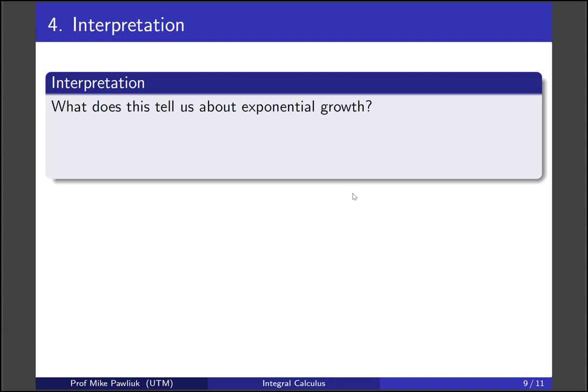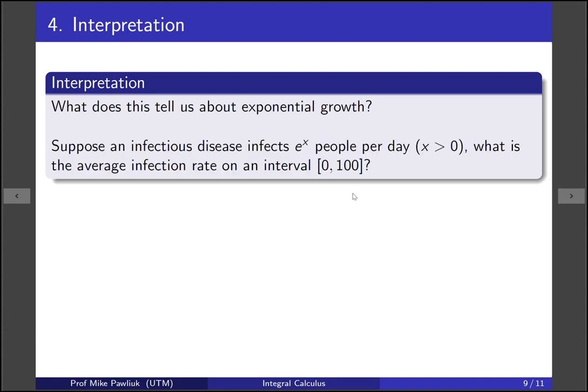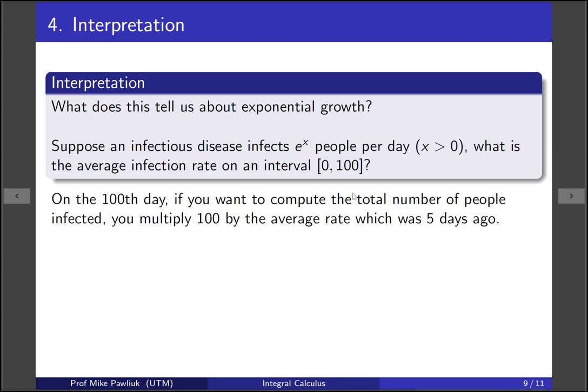Okay so now what does this tell us about exponential growth? So suppose an infectious disease infects e^x people every day where x is positive. What is the average infection rate on an interval from 0 to 100? Well we know that the average rate occurs very close to 100, and it in fact occurs on the 95th day. So on the 100th day if you want to compute the total number of people infected, you multiply 100 by the average rate which we know was five days ago. So this is maybe a counterintuitive thing about exponential growth: the average value occurs very near in the past, it doesn't occur about halfway, it occurs like a couple days previous.